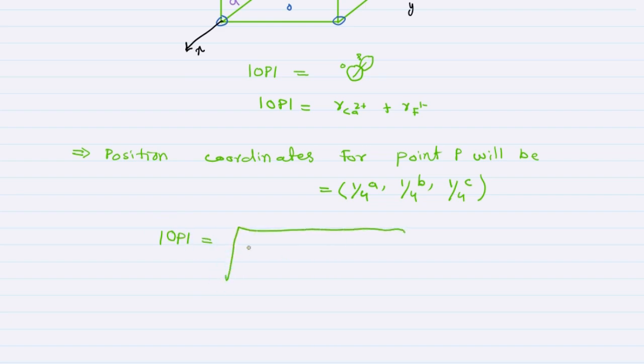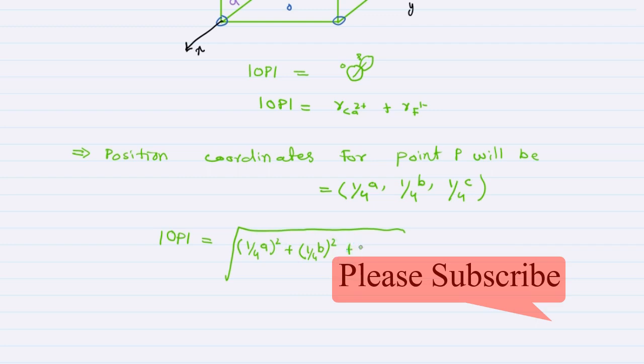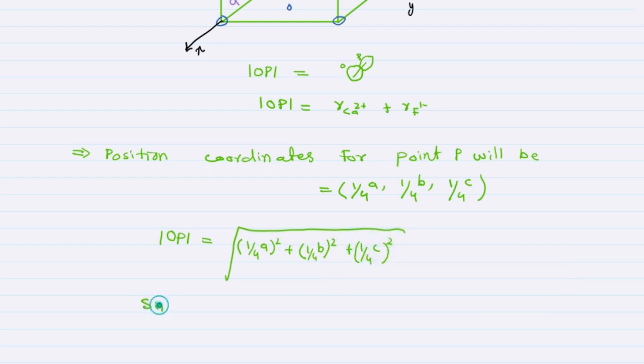By vector algebra, the magnitude of OP equals the square root of [(1/4)A]² plus [(1/4)B]² plus [(1/4)C]².